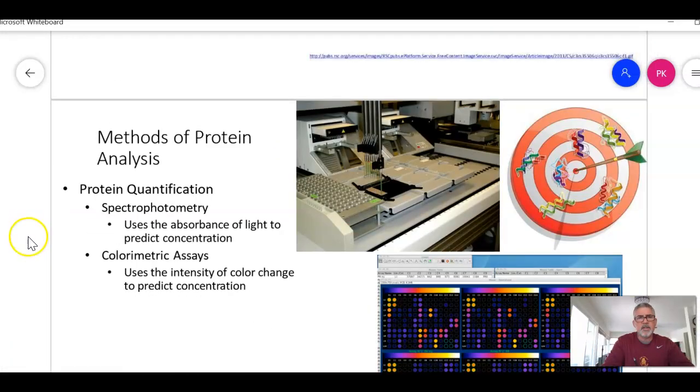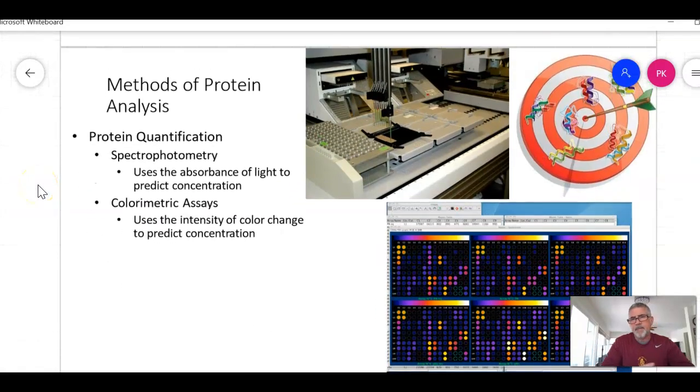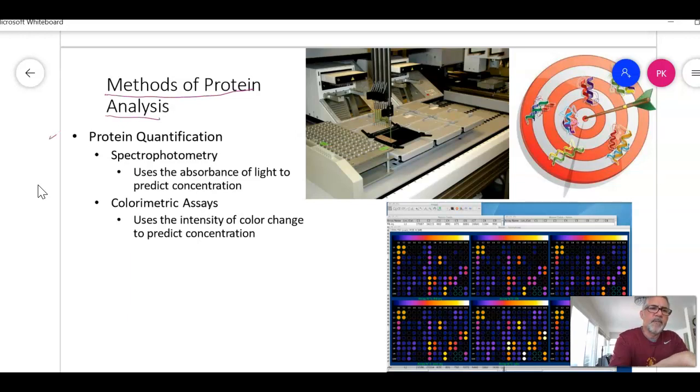I'll start to talk about protein analysis. First we can quantify. Protein quantification: our old friend spectrophotometry uses absorbance of light, something called Beer's Law, and hopefully we'll get to do some of that because we're coming back to school. Then colorimetric assays use color change to predict concentration. So it's either the absorbance of light or the distinct color change.